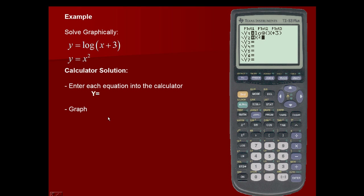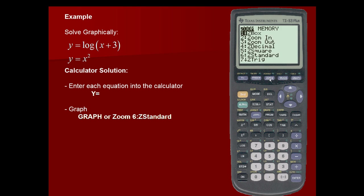Next, we're going to graph. You can either graph using the graph button or zoom 6, which is the zoom standard. For this example, I'm simply going to use zoom and 6. This places my x and y axes running from negative 10 to positive 10 in increments of 1.